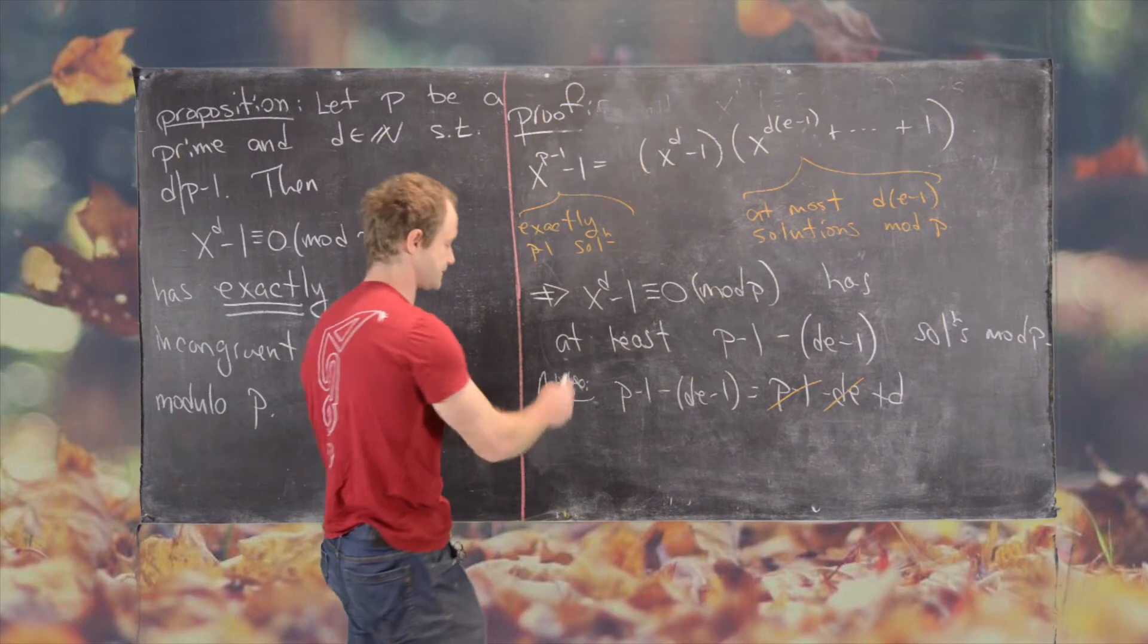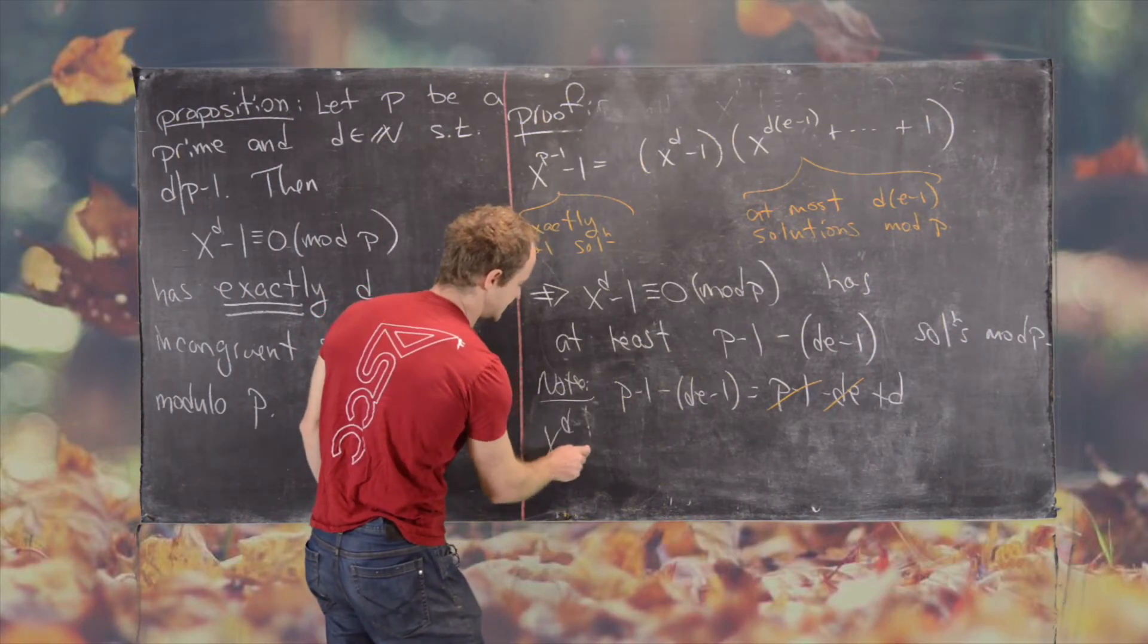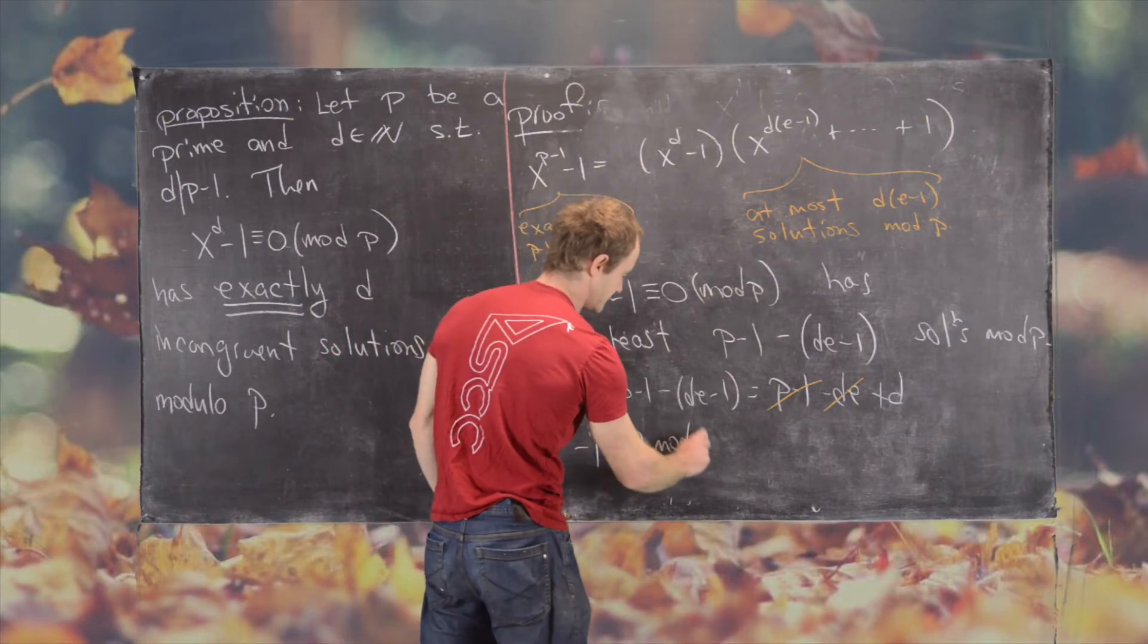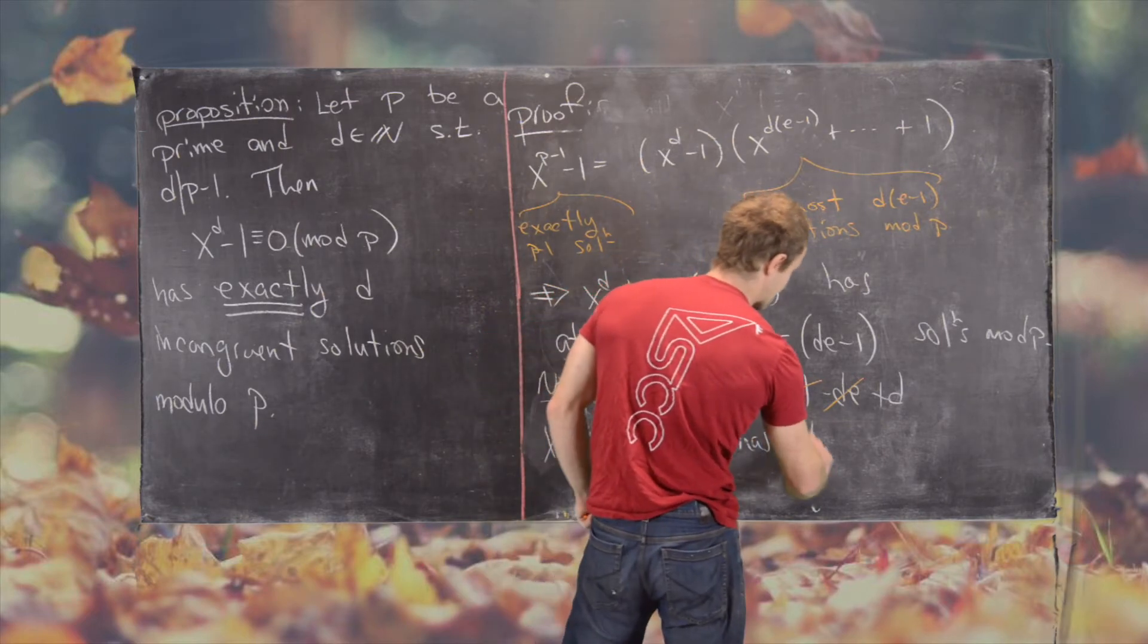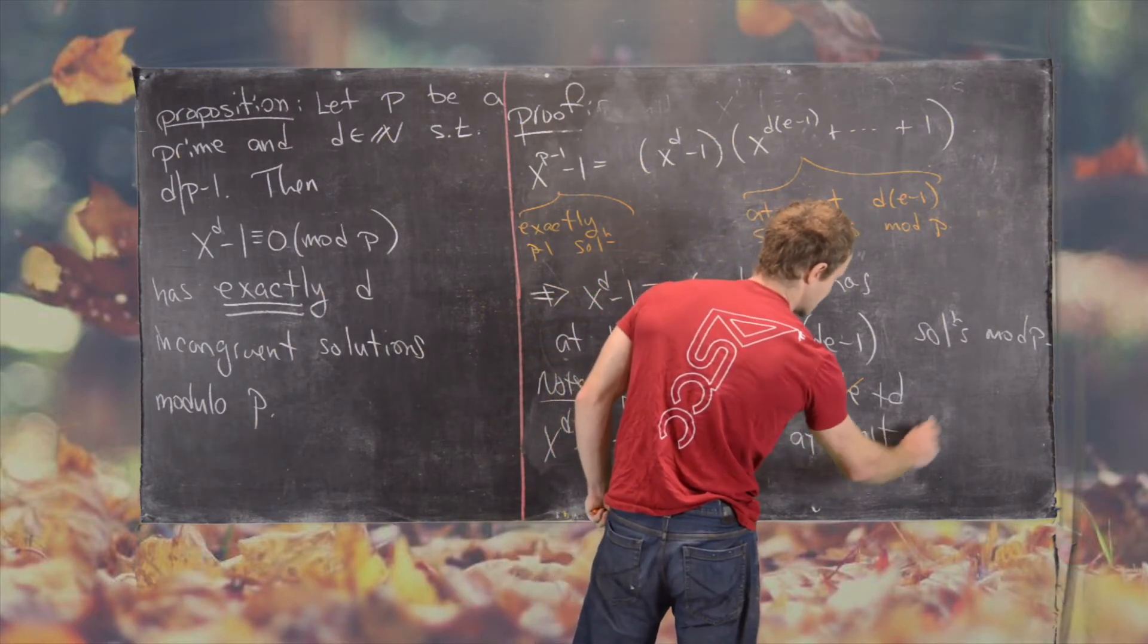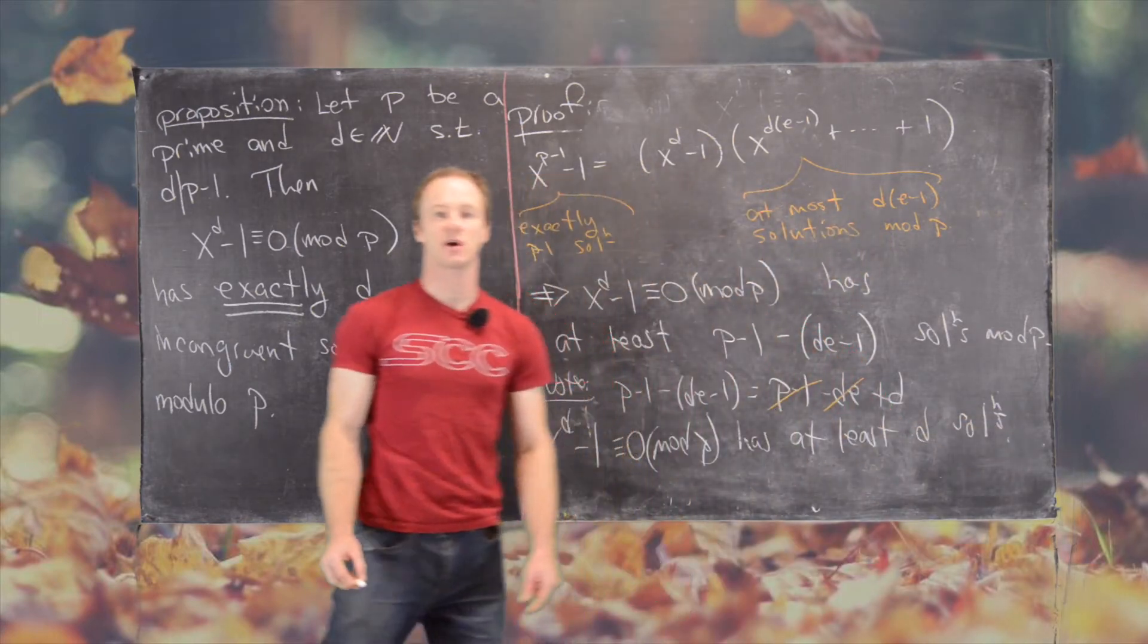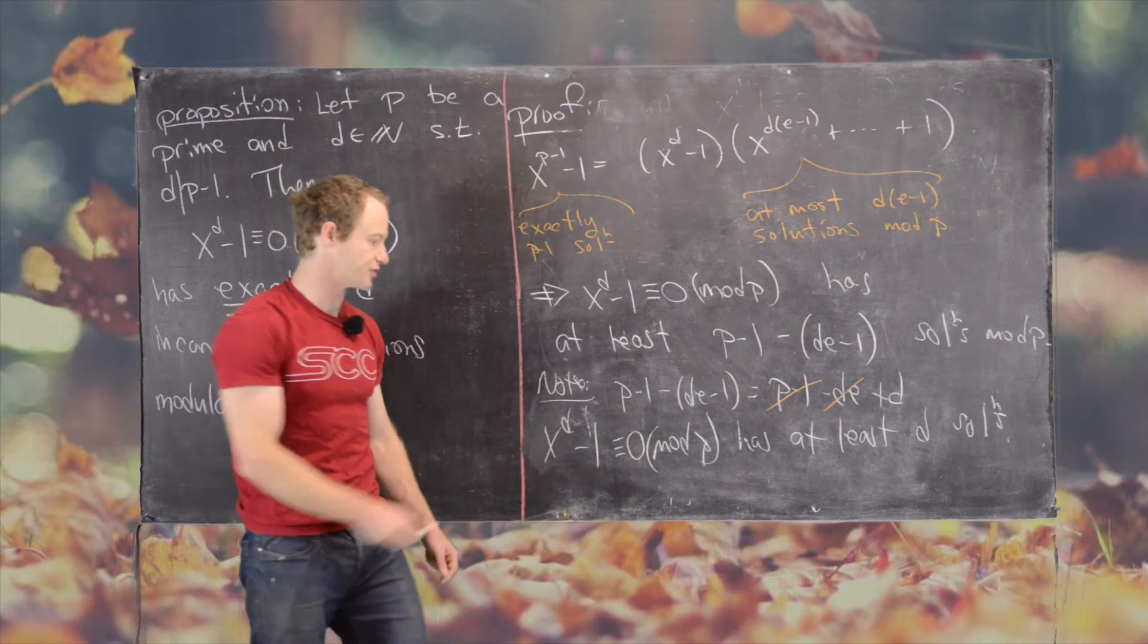So that means x to the d minus 1 is congruent to 0 mod p has at least d solutions. But then we started off by recalling a result that told us that it had at most d solutions.